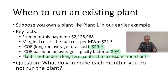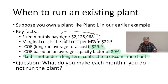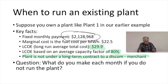Well, this is a trick question of course. The answer is that you earn a negative amount — that is your fixed payment that you have to make each month. If you don't run the plant you don't have any variable costs, but you still have your fixed costs of $2,128,968 every month. You have to write the check whether you run the plant or not. You make the negative amount equal to your fixed costs — the contract costs you had to pay to get this plant built.